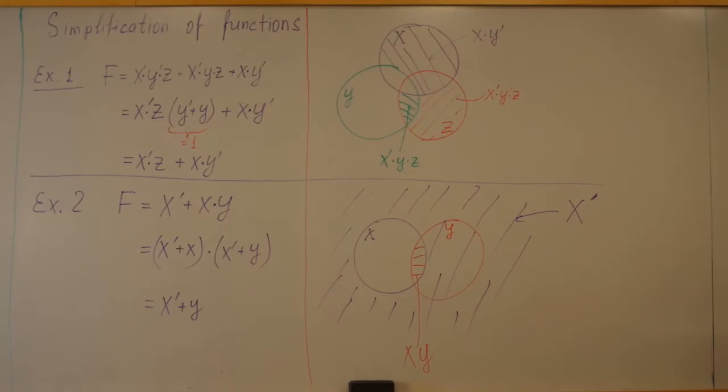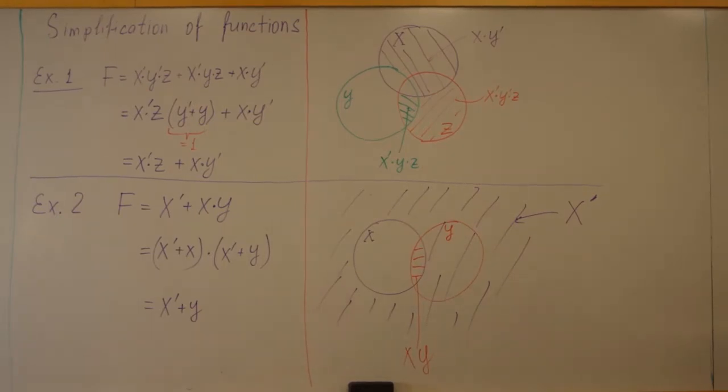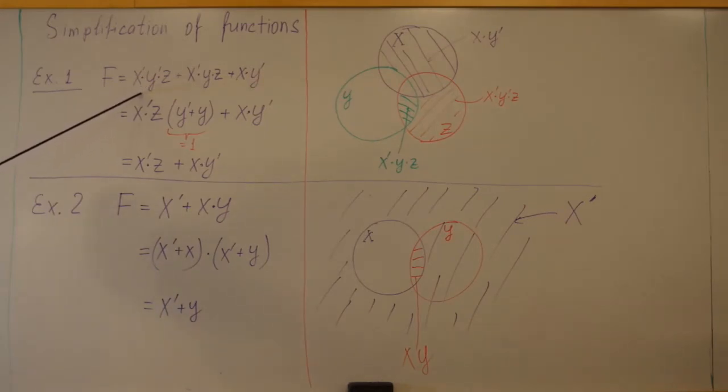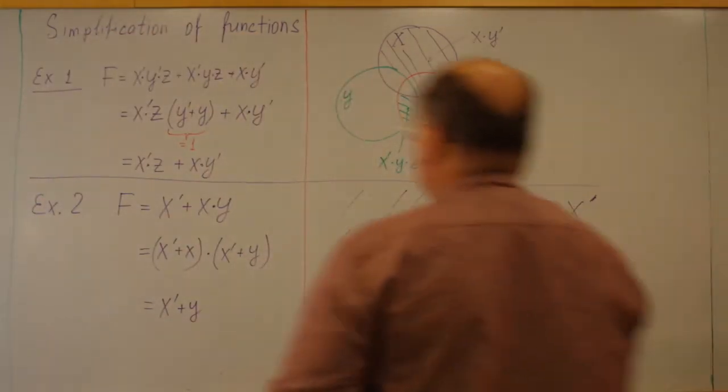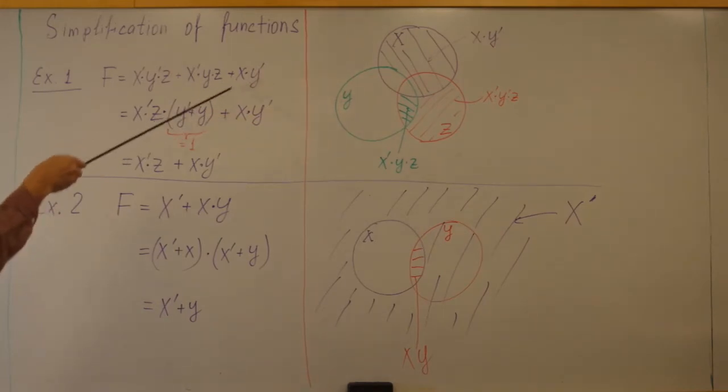Simplification of functions. There are numerous ways to simplify Boolean functions. The first and most obvious way is just to use algebraic laws that we considered earlier. For example, we have function F equals not X, not Y, Z, plus not X, Y, Z, plus X, but not Y. We may use our properties and we can see that we may take X prime Z in these two terms. We may take them outside parentheses. So we have X prime Z times Y prime plus Y. And the last term is left. Y prime plus Y, we know this is one. So now we are left with X prime times Z plus X times Y prime.